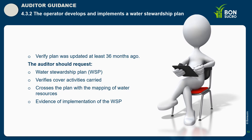From the auditing point of view, first be sure the water stewardship plan exists and is updated — meaning it covers at least 36 months — verify covered activities, cross-reference the plan with the mapping of water resources, and check evidence of implementation. Confirm that all stakeholder communications are documented and that it is correlated with the map from 4.3.1 — that the mapping is correlated with stakeholders in the catchment, and that the plan includes activities and resources for implementation.